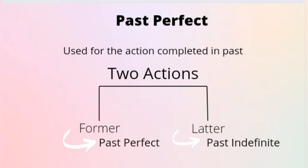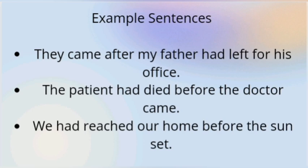Our next tense is past perfect. This tense is used for actions completed in the past. We also use past perfect to show the order of two past events — for the former action we use past perfect and for the latter action we use past indefinite. Examples: they came after my father had left for his office; the patient had died before the doctor came; we had reached our home before the sun set. In modern usage, when 'before' and 'after' are used, past indefinite is preferred, as 'before' and 'after' make the sequence clear.